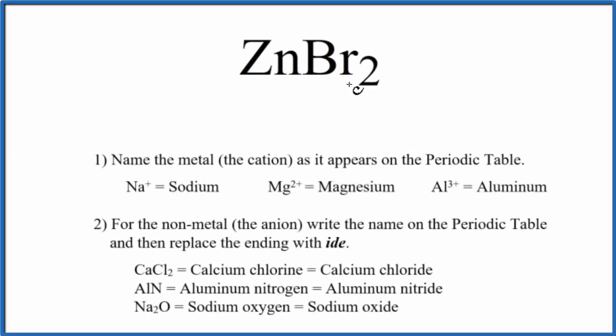To write the name for ZnBr2, we first need to recognize that we have a metal and a non-metal. So in general, when we have a metal and a non-metal, we have an ionic compound.